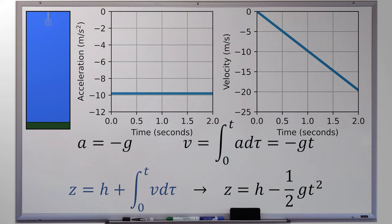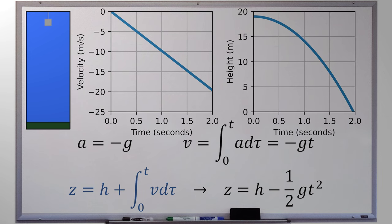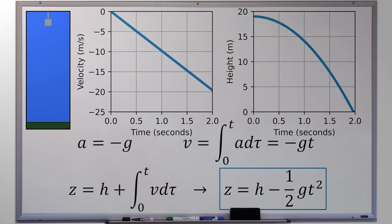Now we can apply very similar reasoning to calculate the height over time from the velocity equation — we just let it accumulate over time. Height starts at some h value, the drop height, and then we do the same kind of integral. When we integrate negative g·t dt, we add one to the exponent and divide by the new exponent, so t gets promoted to t squared and we divide by 2. That's why we end up with z equals h minus one half g t squared. Little g doesn't come out of nowhere — it's a consequence of our equations. And likewise, this parabolic curve, h minus one half g t squared, comes directly out of our universal gravitational acceleration equation.